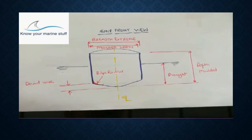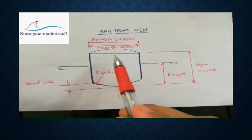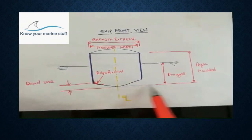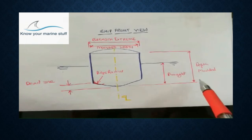Depth molded. This is the vertical distance between the molded baseline and the top of the beams of the uppermost continuous deck, measured at the side of ship. In this section, this is the uppermost continuous deck, and from the baseline this is known as molded depth.